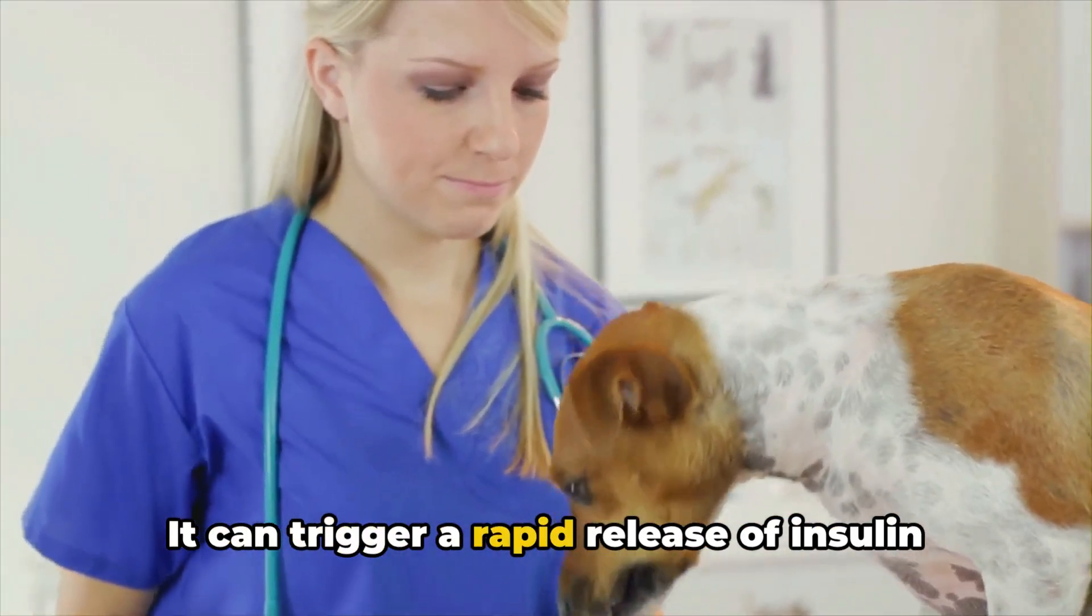Switch gears to onions and garlic. These flavorful ingredients are staples in many of our favorite dishes, but they're no treat for our canine companions. These foods contain compounds that can lead to anemia by causing damage to a dog's red blood cells. This could result in symptoms like weakness, breathlessness, and a decreased appetite. So next time you're chopping up fruits for a salad or stirring a pot of savory soup, keep your furry friend in mind. Even health foods can be hazardous.